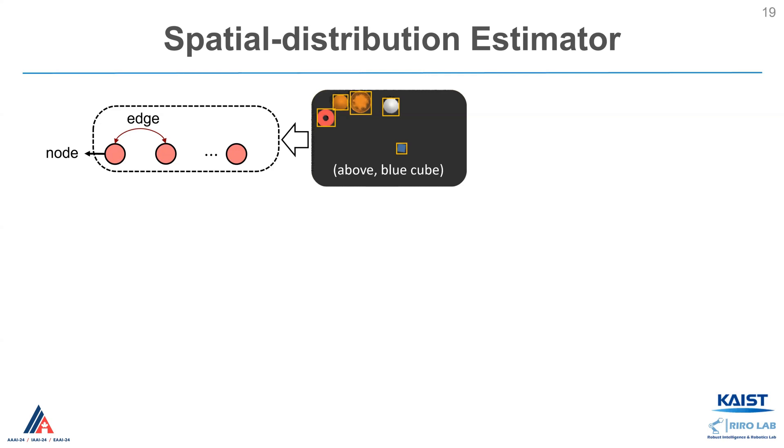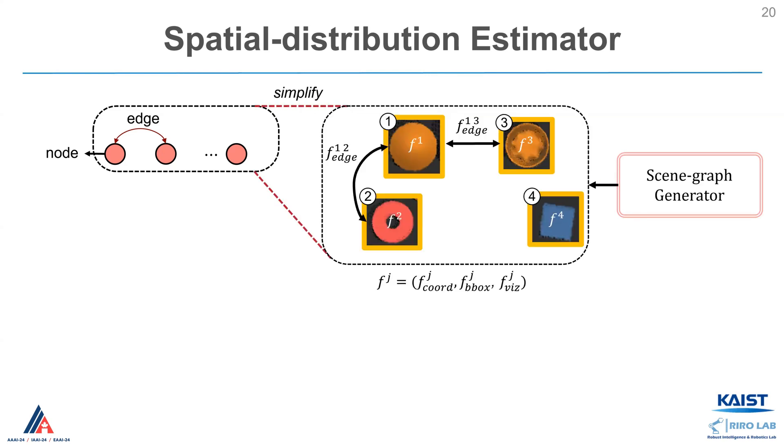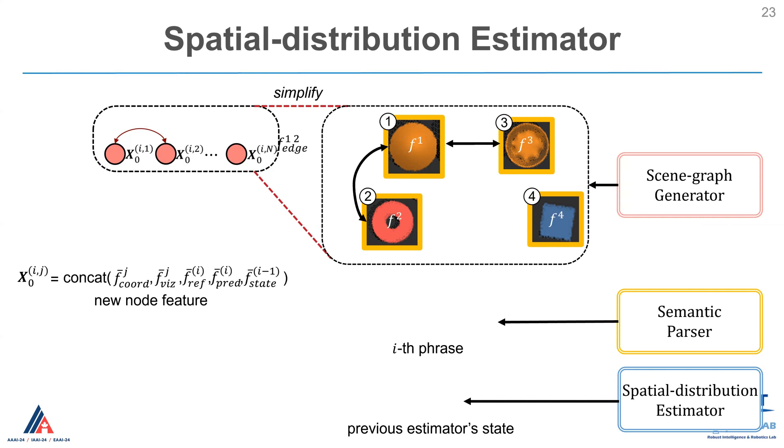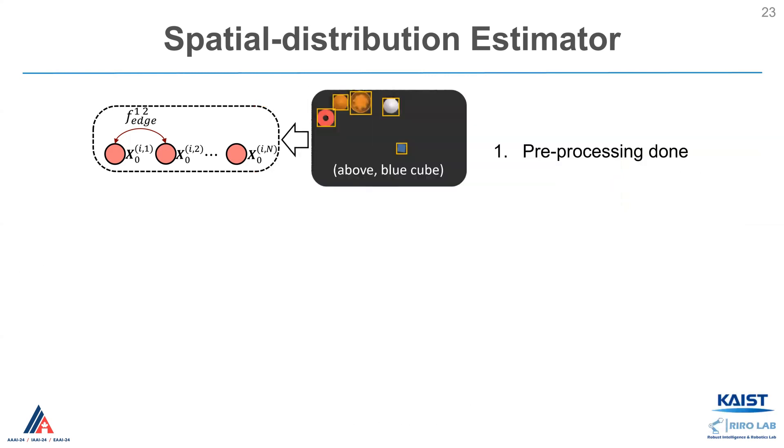The initial step is pre-processing the given scene graph and phrase. The scene graph, generated by scene graph generator composes node features and edge features. The semantic parser produces the feature of each phrase of a composite instruction. Also, the state of the estimator from the previous step is used here. I will explain what the previous estimator's state is later. These features are first projected by a linear layer. And then concatenated, generating a new node feature. The edge features from the scene graph will directly be used as a new edge feature. Finally, the pre-processing is done.